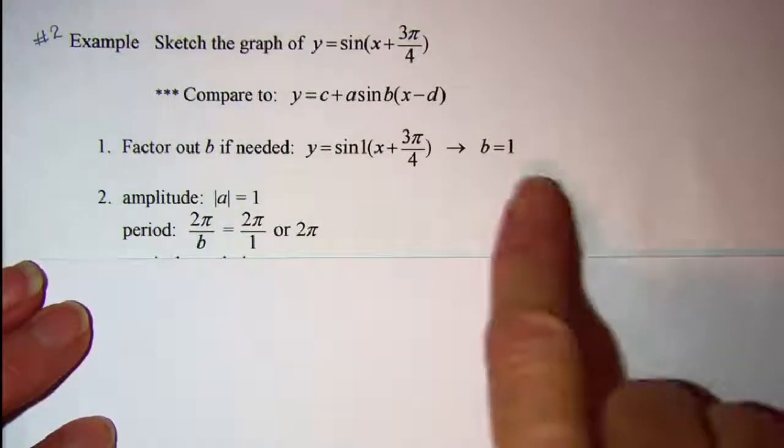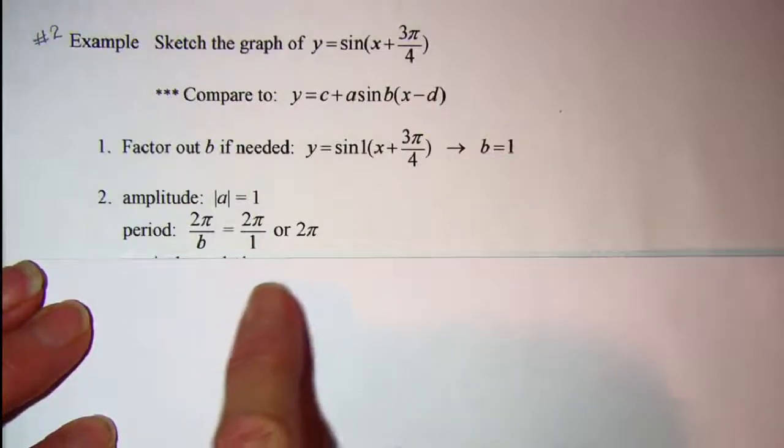Since we have a b value of 1, then our period is 2 pi.